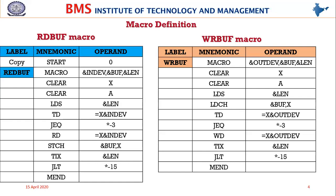Then we test the output device, and if it's busy we jump back to test it again until it becomes free. Once free, WD writes the contents of the accumulator - loaded by LDCH - onto the output device. TIX increments X and compares with the length; if less, we go back to test the device and write the next byte. So these are the two macros: one reads from input device to buffer, the other reads from buffer and writes to output device.